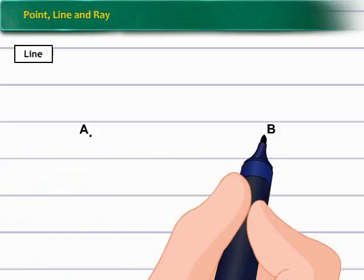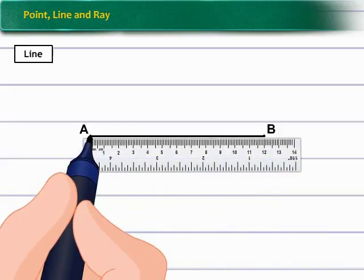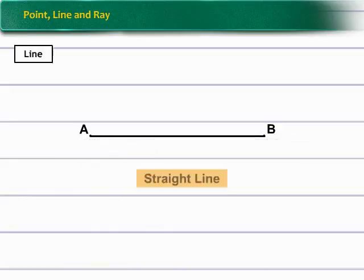That is, a line is a set of points closely arranged without gaps. Mark a point A and B on a paper. Draw a line touching both using ruler. This is a straight line. Put an arrow head at each of its end. The figure thus obtained is called line AB.